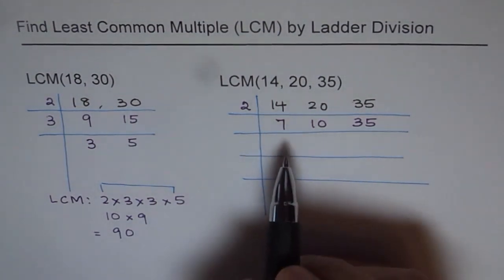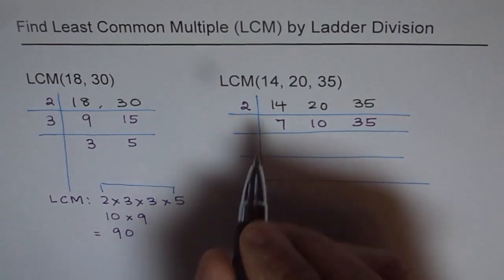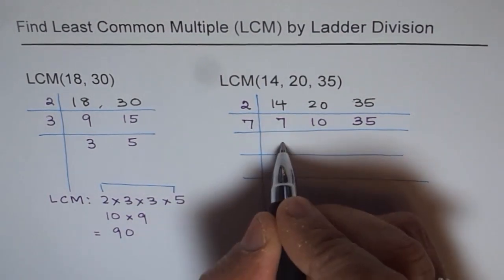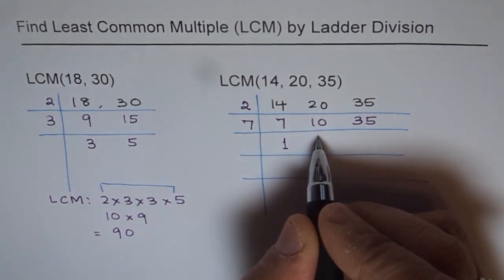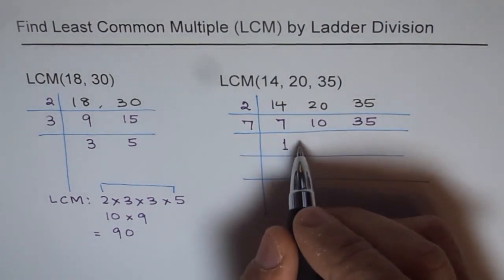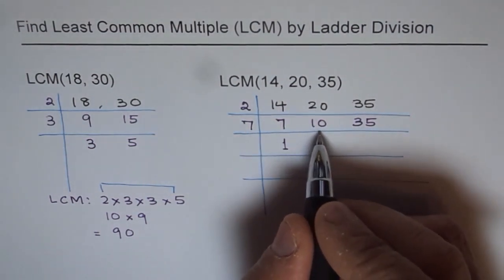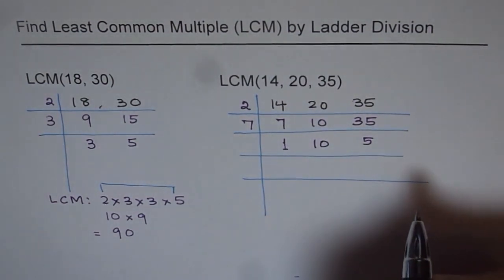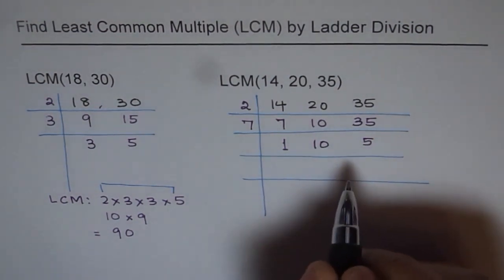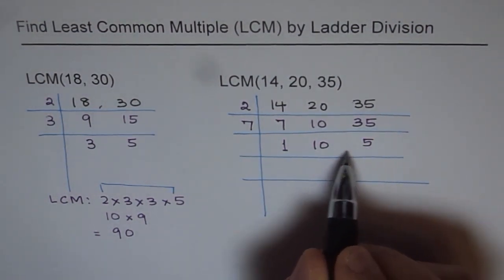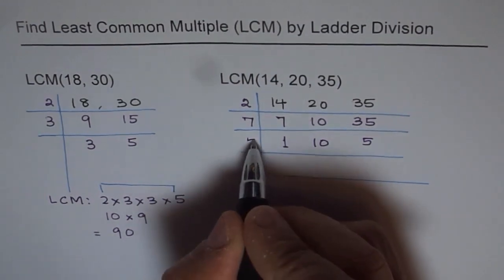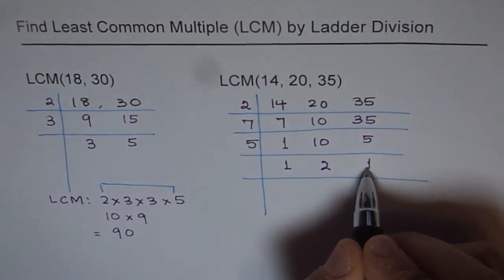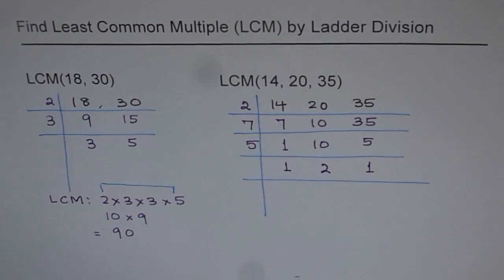Now the common factors between these could be 7. 35 is 7 times 5, so we can divide by 7. 7 goes 1 time. 10 does not have 7 as a factor, so you cannot divide 10 by 7. We will copy the composite number 10 as such. 35 goes 5 times. Now you can see that we have 10 and 5 which has a common factor of 5, so let's divide by 5. Retain 1 here. 10 goes 2 times and 5 goes 1 time. Now we have all prime numbers with us.